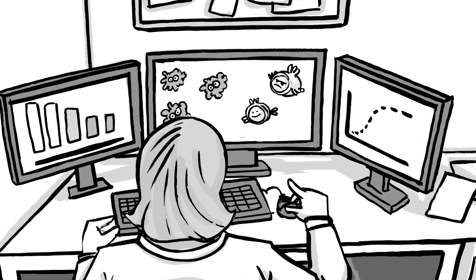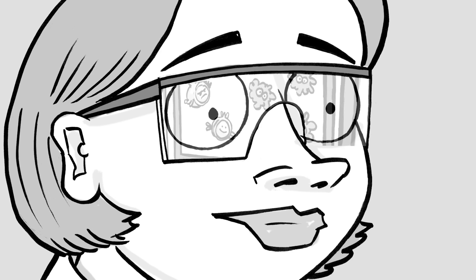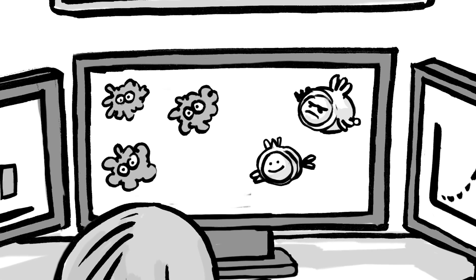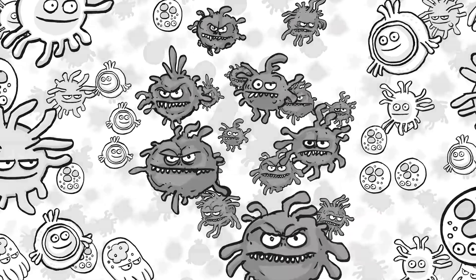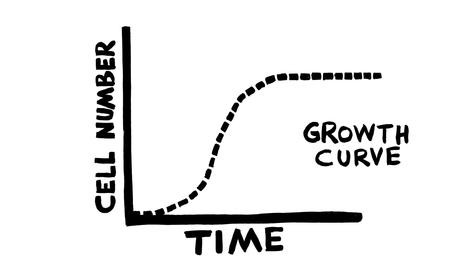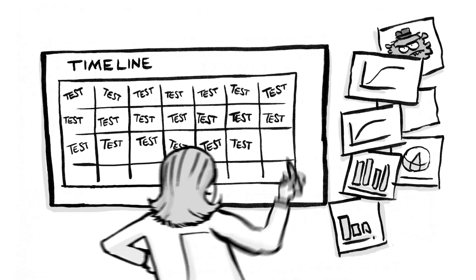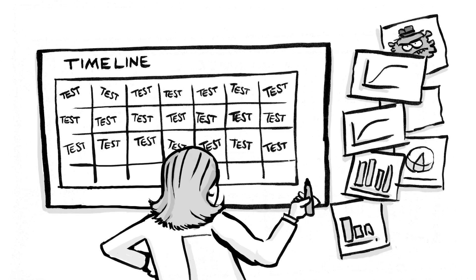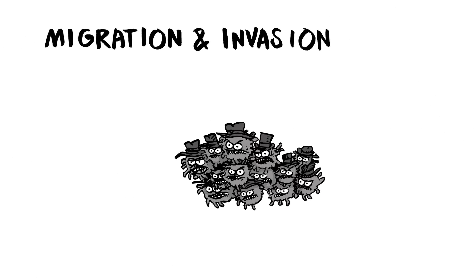Well, in an ideal world, you wouldn't need to. You'd simply measure the cell activity as it happens in real time without disturbing your cells. This would give you a true reflection of the growth curve, helping you to characterise your cellular models and plan downstream assays — for example, to study how tumour cells move or how their speed might change over time.